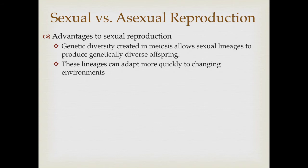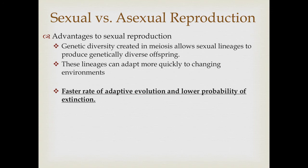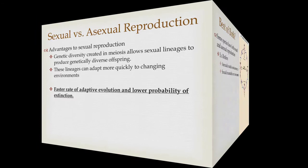The key advantage of sexual reproduction is the production of genetic diversity in offspring. Sexual lineages can therefore adapt more quickly to changing environmental conditions, giving them a faster potential rate of adaptive evolution and a lower probability of extinction. Yes, it's slower and less efficient — you're not passing on as many copies of your genes — but by producing genetic diversity, you're not putting all of your eggs in one genetic basket. Some offspring may not fit the next generation, but others might have just the right genetic combination to be very successful.